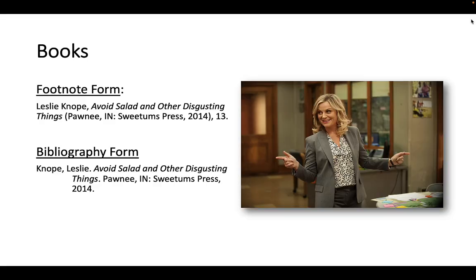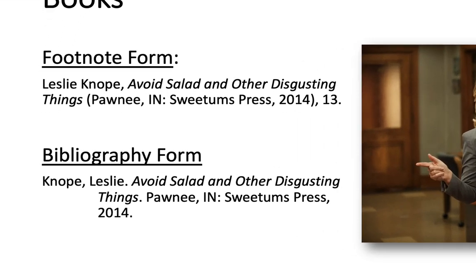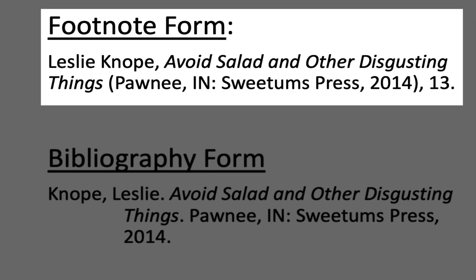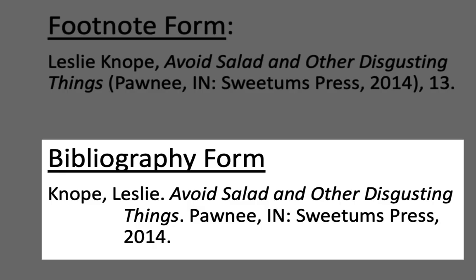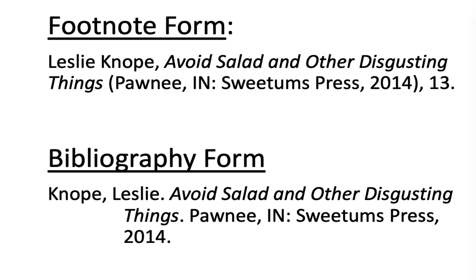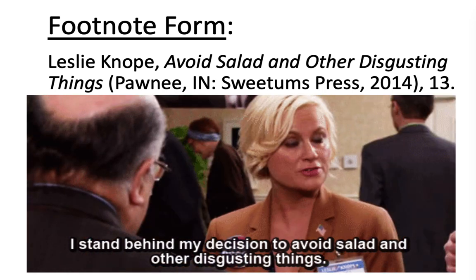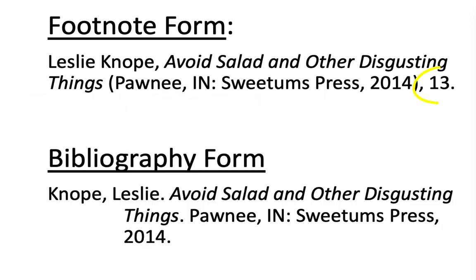Let's start with books. There are two forms to know for each citation — footnotes and bibliographies. Here's a made-up book: Leslie Knope, Avoid Salad and Other Disgusting Things. Pawnee, Indiana: Sweetums Press, 2014, page 13. First we have the author, Leslie Knope. Then the title in italics — titles of books are always in italics or underlined. Then publication information in the form: place, colon, press, comma, year. The place is always a city. And in footnote form, the publication information is in parentheses. Finally, you have the page number.